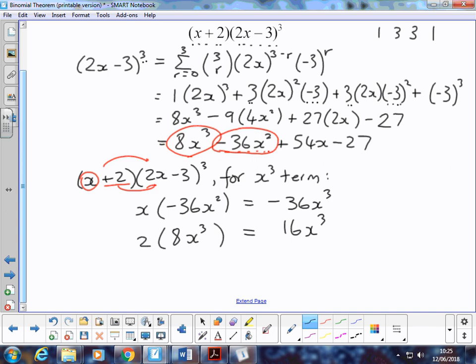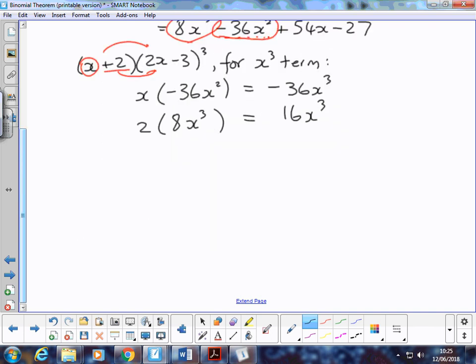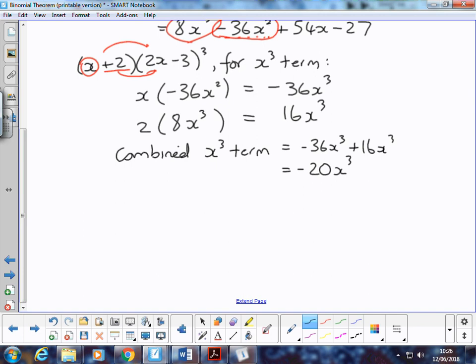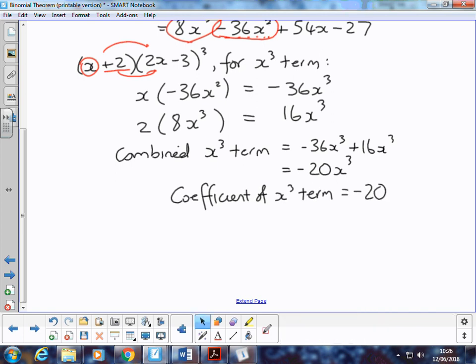So the combined term, when we did multiply all this out, would involve us putting these two together. So the combined x cubed term is equal to negative 36x cubed plus 16x cubed, which is negative 20x cubed. If we answered the question, find the coefficient of the x cubed term in the expansion. So the coefficient of the x cubed term is negative 20, and that's how we deal with it.